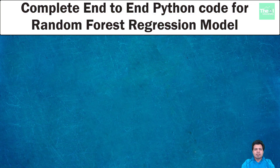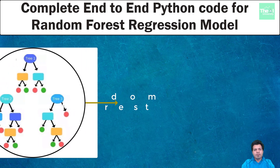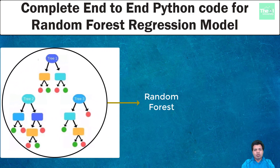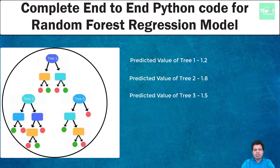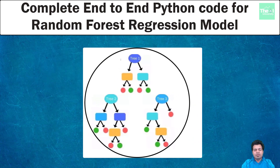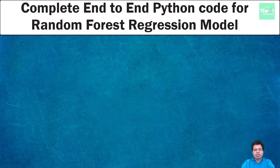We learned earlier that random forest is a group of several decision trees, with each one of them making their own predictions of the target variable. All of these individual predictions combine together to provide the average of all the different predictions associated with these different decision trees in the forest. Random forest definitely is better than individual decision trees because it gives a more accurate prediction. Just like decision trees, random forest is also non-linear and non-continuous in nature.